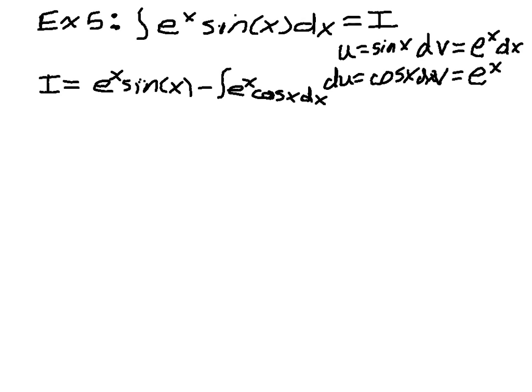And now I'm stuck with another integration by parts. So I'm going to say that u is cosine of x, and dv is e to the x, dx again.